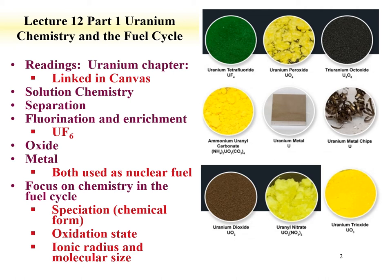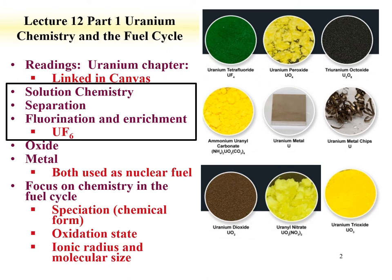Part one of the lecture will cover solution chemistry of uranium. When we discuss the solution chemistry of uranium, we see that the uranyl species dominates—that's the UO₂²⁺. An example of a solid phase is uranyl nitrate. If one adds that to solution, it'll dissolve, and the uranyl ion UO₂²⁺ will be in solution. The yellow color of uranium-6 species is characteristic and can be used to explore uranium by UV-visible spectroscopy.